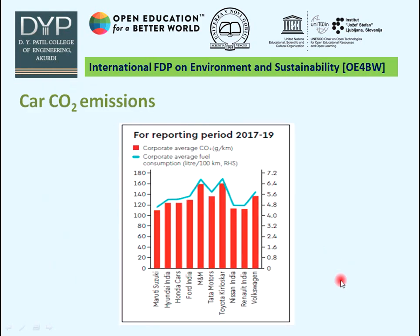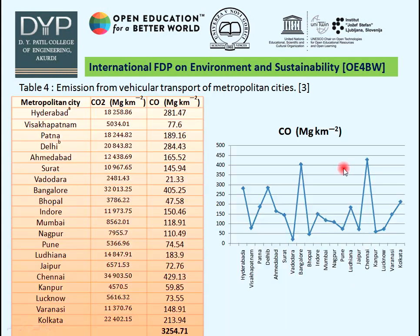Car CO2 emission data is shown for different manufacturers including Maruti Suzuki, Hyundai, Honda, Ford, Mahindra & Mahindra, Tata Motors, Toyota, Nissan, Renault, etc. For metropolitan city emissions, CO2 and CO emission data are presented. The graph indicates the maximum CO emission for Chennai.